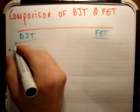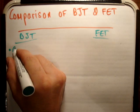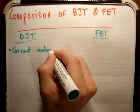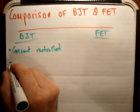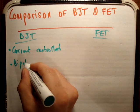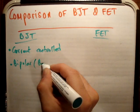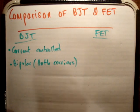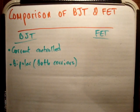In my video on the BJT I said the following: this was current controlled. I said it was bipolar. What does that mean? Bipolar means that both carriers are used. We use both holes and electrons.